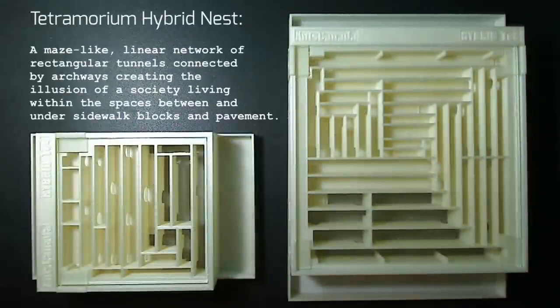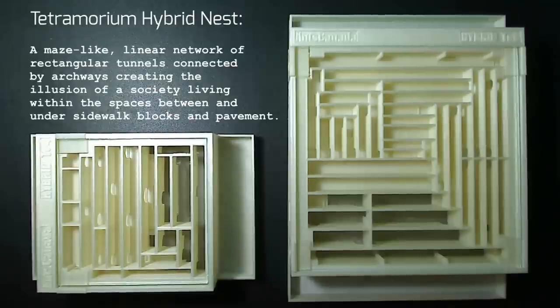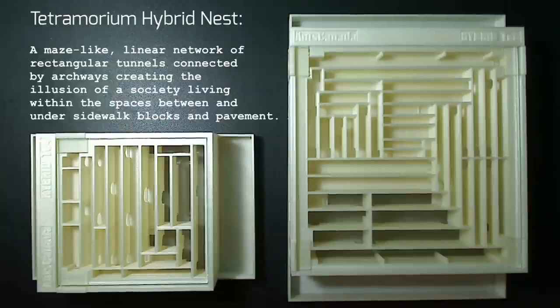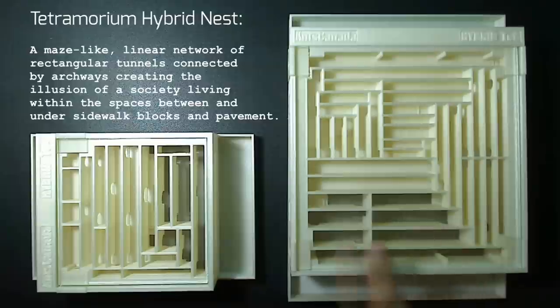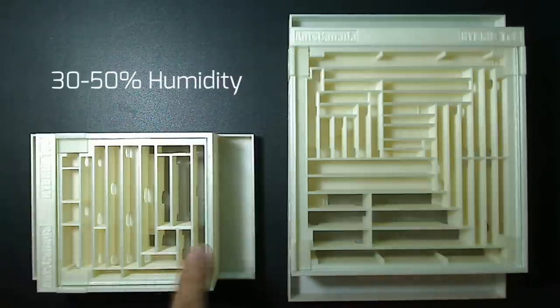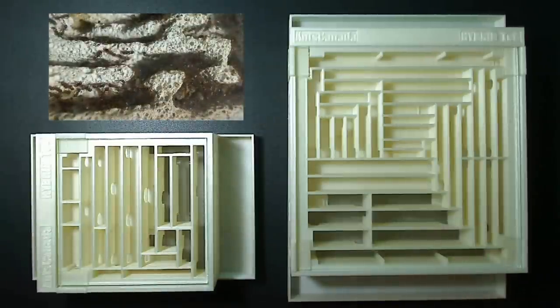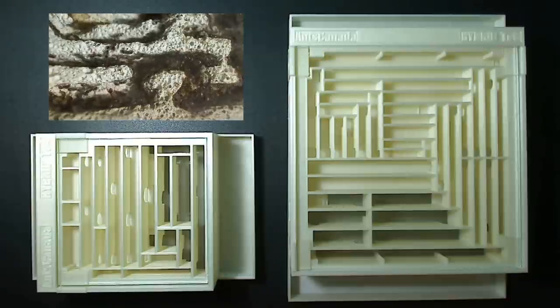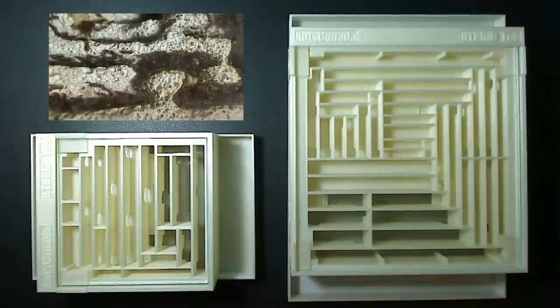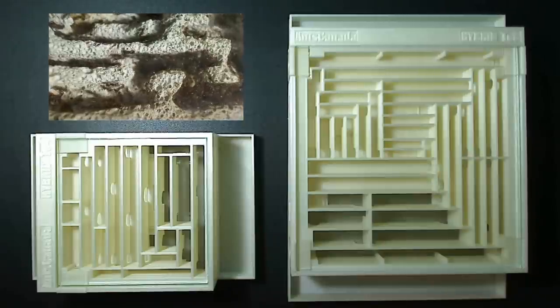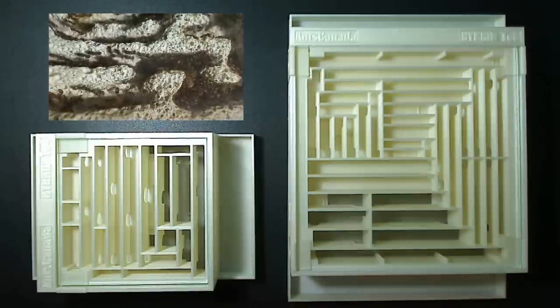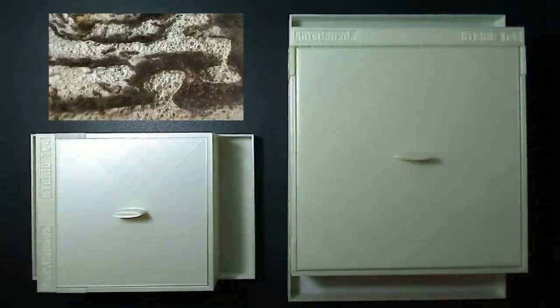The Tetramorium hybrid nest. A maze-like linear network of rectangular tunnels connected by archways, creating the illusion of a society living within the spaces between and under sidewalk blocks and pavements. It offers 30-50% humidity and is suitable for Tetramorium ants, as well as other small ant species like Solenopsis, Crematogaster, and Temnothorax. It may not be suitable for Camponotus, Pogonomyrmex, Messor, Formica, or any species whose queen or workers exceeds 4mm in length or girth.